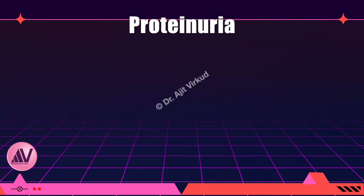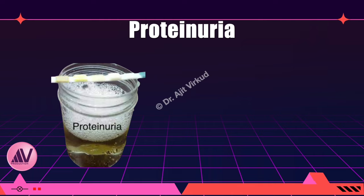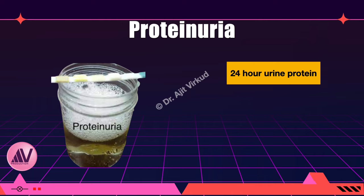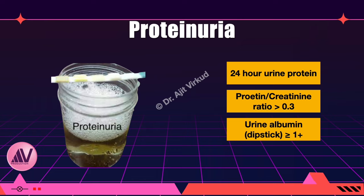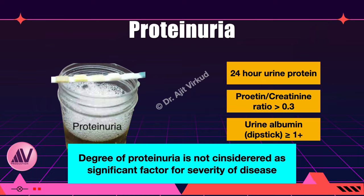First, I will discuss proteinuria. Since we don't have time to diagnose significant proteinuria based on 24-hour urine estimation, we do a protein-creatinine ratio. A ratio greater than or equal to 0.3 indicates proteinuria, and a level greater than 0.7 indicates severe proteinuria. A dipstick test showing one plus also indicates proteinuria, but it is not very reliable. Please remember: unlike earlier thinking, the degree of proteinuria is no longer considered a prognostic factor for severity of disease.